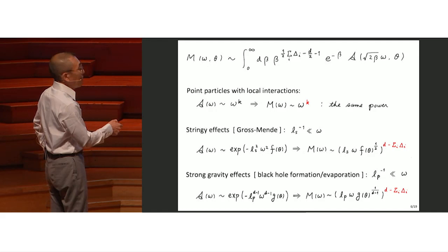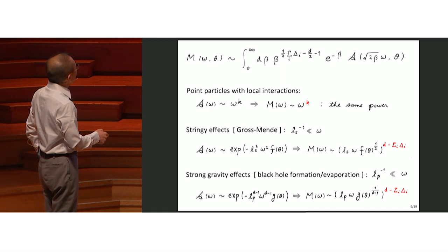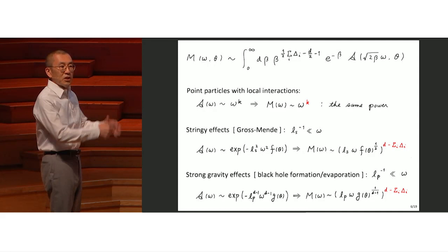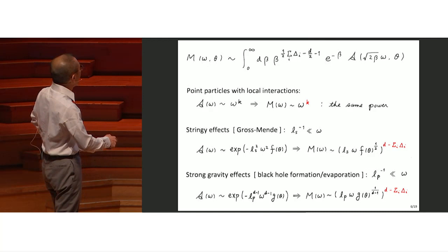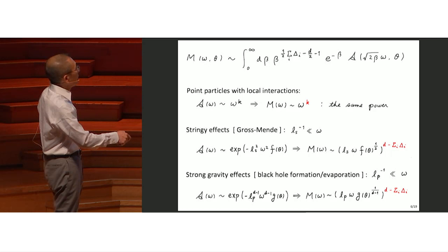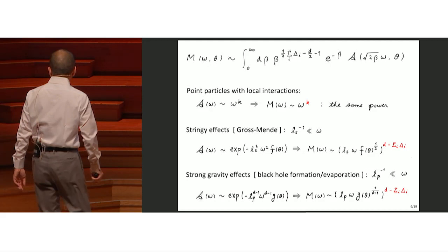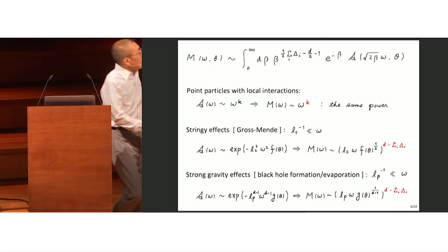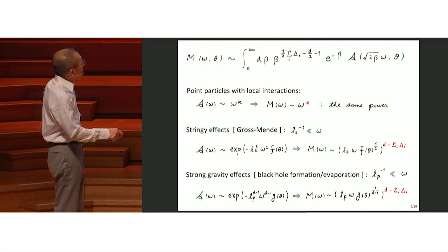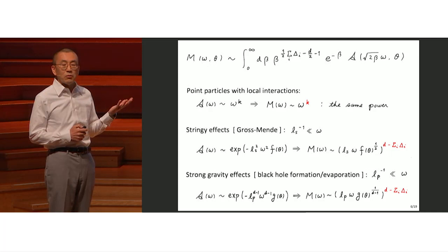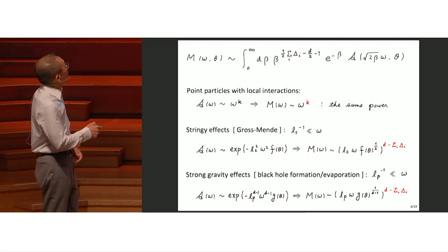If you are interested in the Gross-Mende effect where energy is bigger than the string scale, string forces start growing. You have some function F of theta where the amplitude decays exponentially — much softer ultraviolet behavior compared to particle amplitude — but you still get a power behavior. For strong gravity effects such as black hole formation and evaporation, you can estimate the effect with a different angle dependence and still get a power. Pay attention to the fact that these powers depend on the conformal dimension of the external operator.